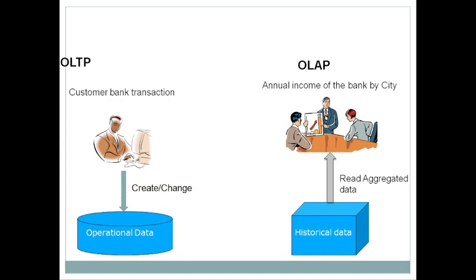OLAP stores the last 10 or 20 years of data. For example, a factory might want to see which product had higher sales in the month of September over the last 10 years, to make better manufacturing decisions.